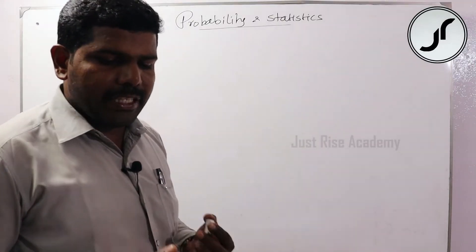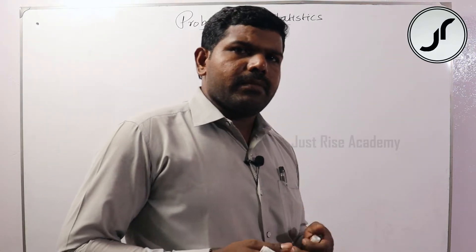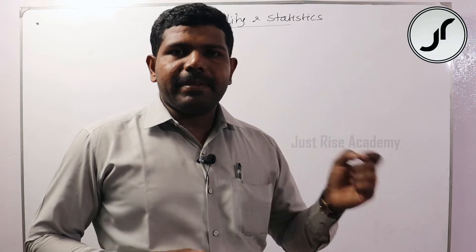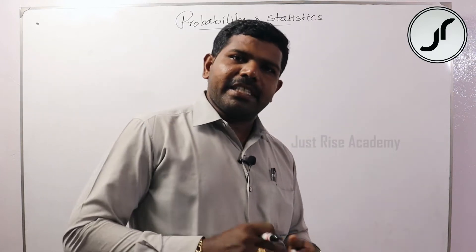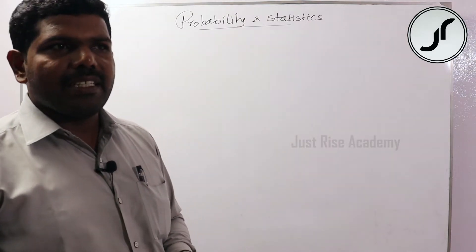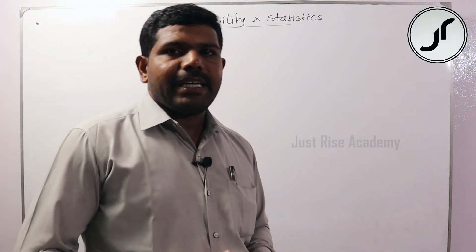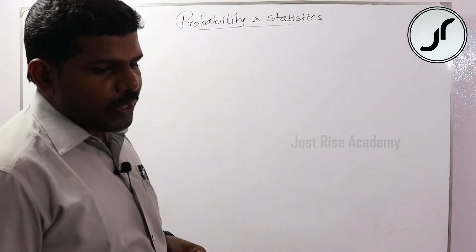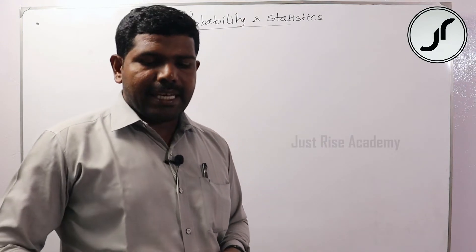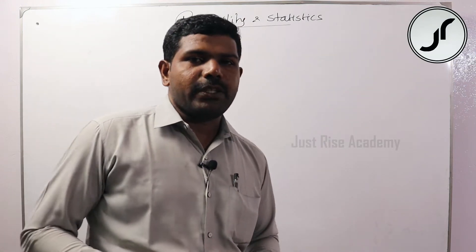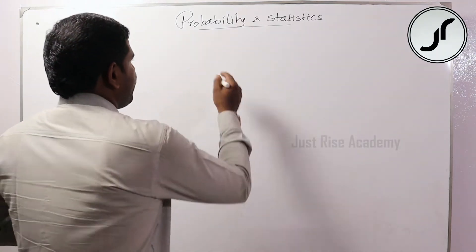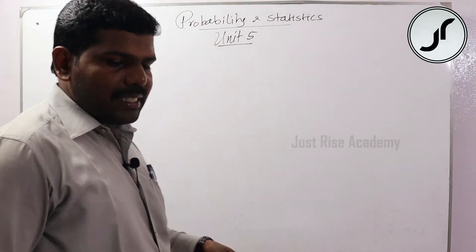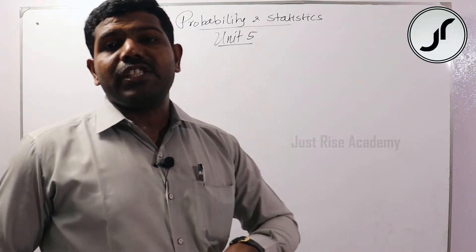Probability and Statistics covers five units: the first unit is one-dimensional random variables, the second unit is two-dimensional random variables, the third unit is testing a hypothesis, the fourth unit is design of experiments, and the fifth unit is statistical quality control.